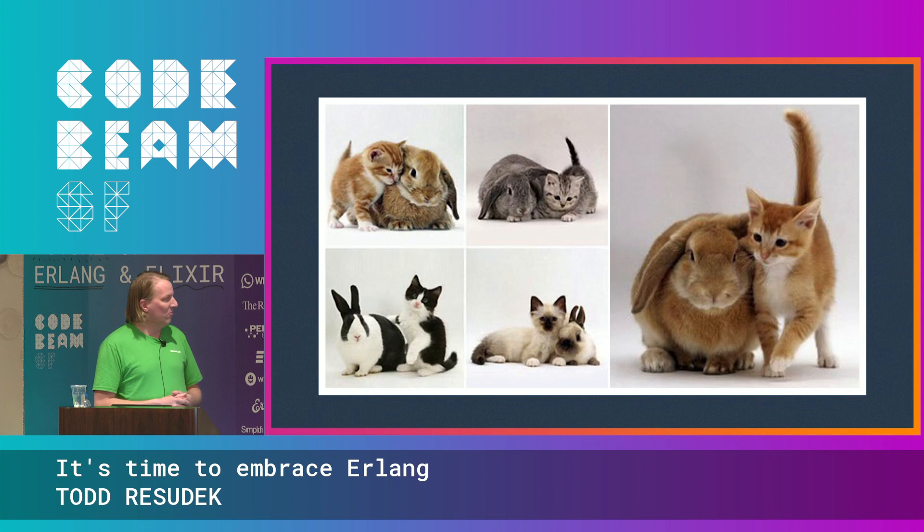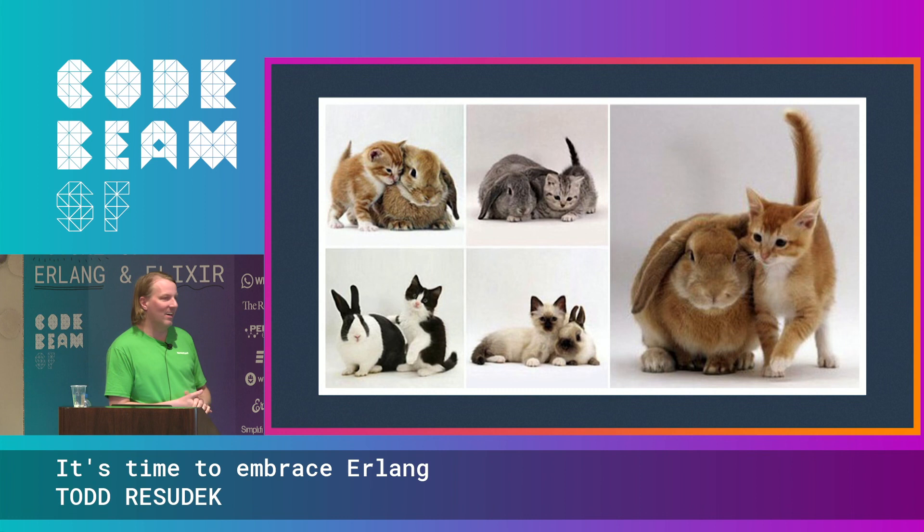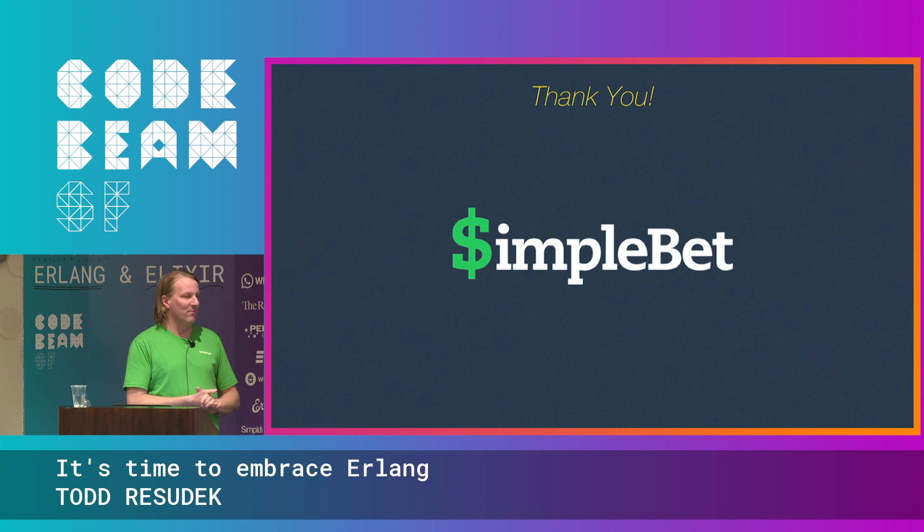My hope is that after this talk, Erlang and Elixir are like this — if you look at all these kittens and bunnies, they're doppelgangers, they actually look a lot alike, they're both really cute in different ways, and in this case they're very good friends. Thanks everybody for being here, and thanks to my employer Simple Bet for letting me come out and give this talk today.